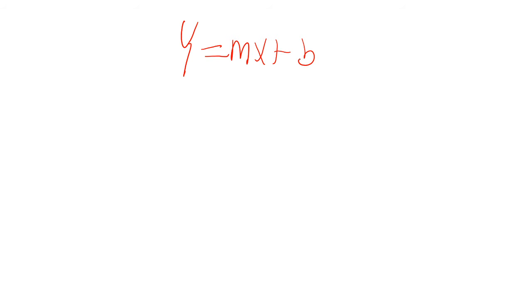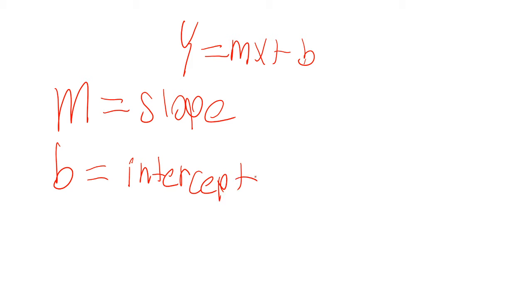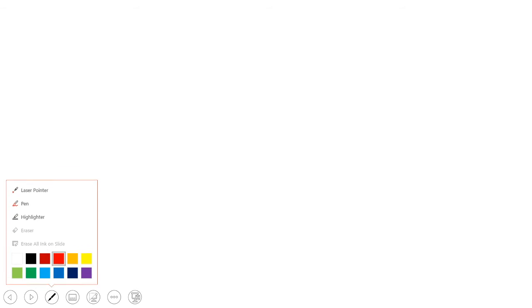So we've learned how to convert linear equations in slope-intercept form, which is y equals mx plus b, where m and b are constants. m is the slope of the line, and b is the y-intercept. When we're given a linear equation to graph, we need to first convert to slope-intercept form, and then graph the equation.